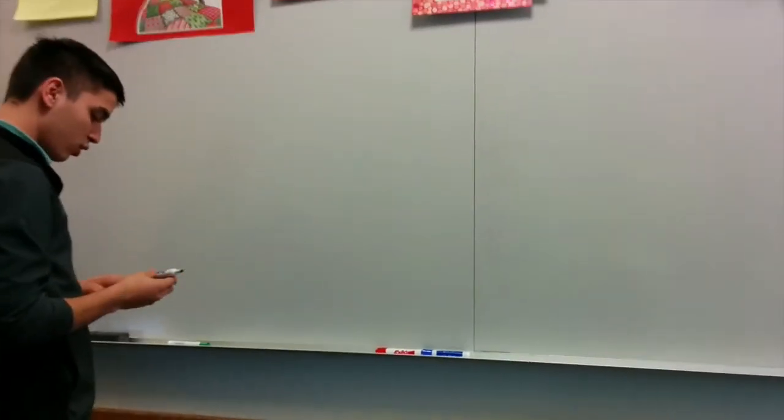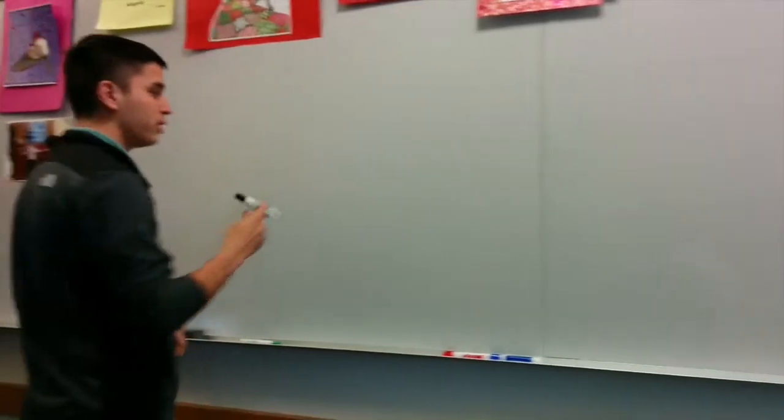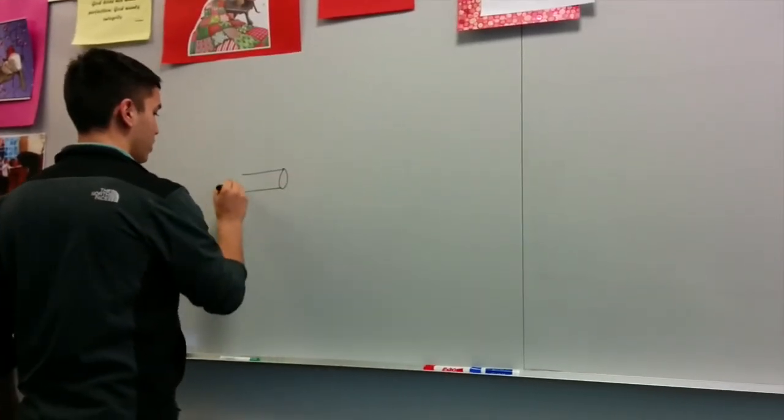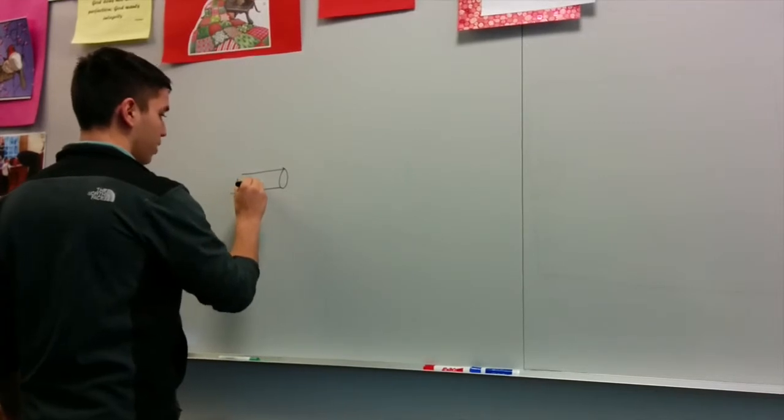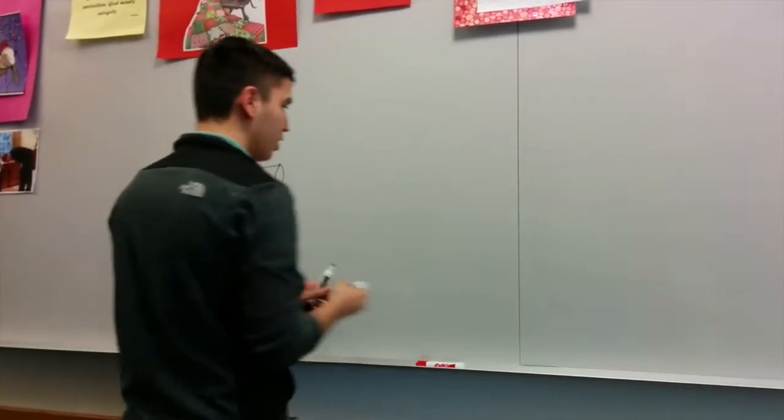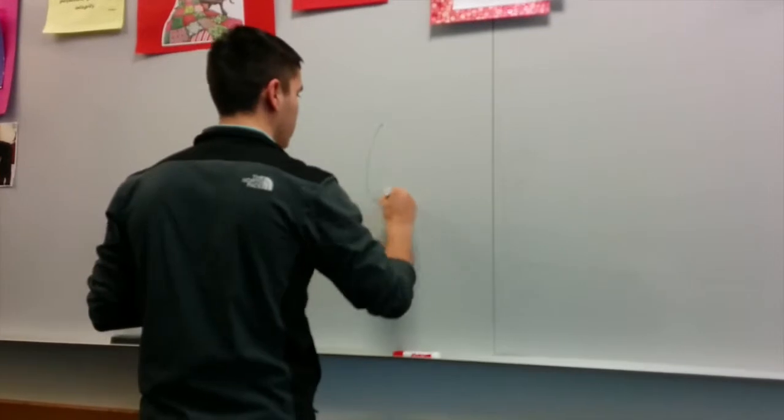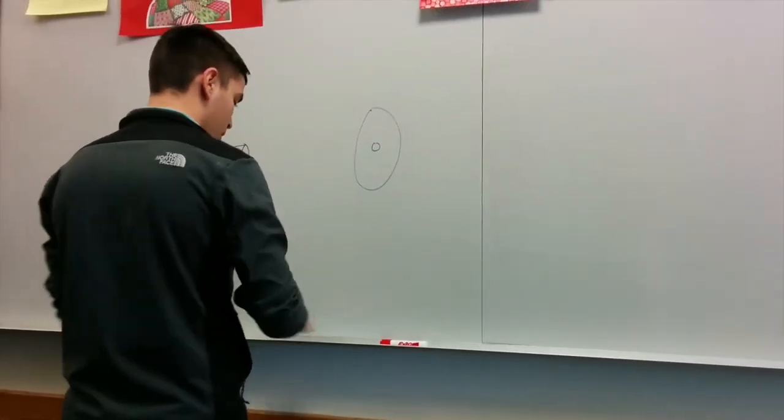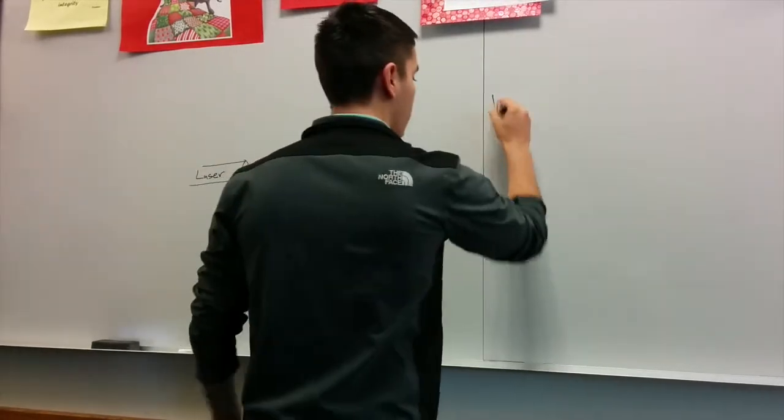So now I'm going to draw a diagram to show what is actually happening. We have our laser here. We have our CD in the middle. The CD serves as an obstacle for the light. And on the end we have the board.